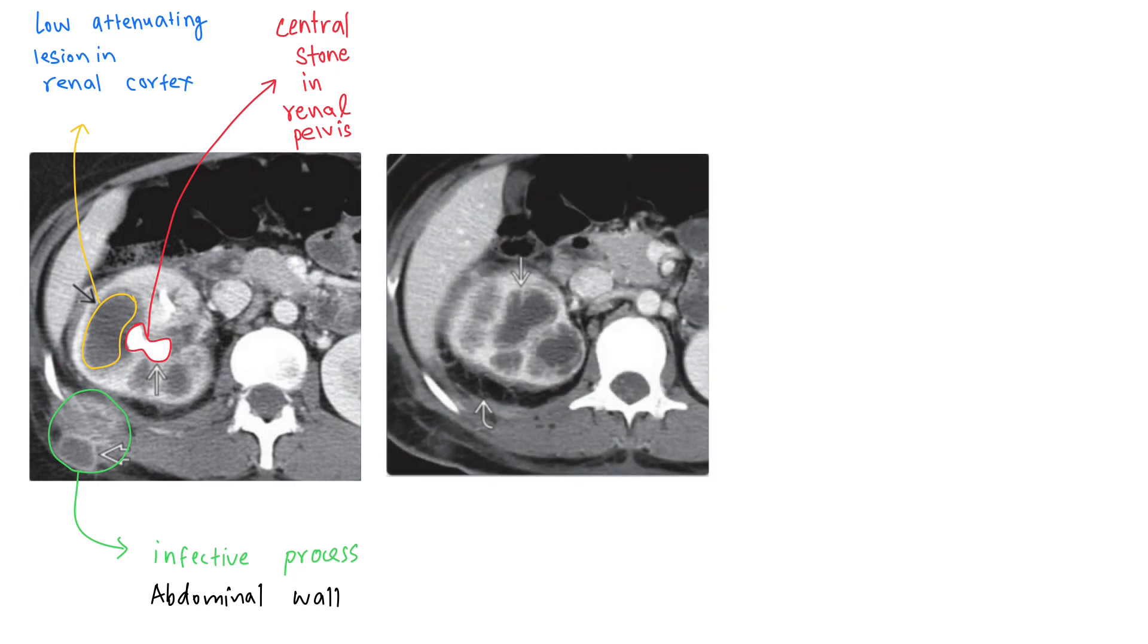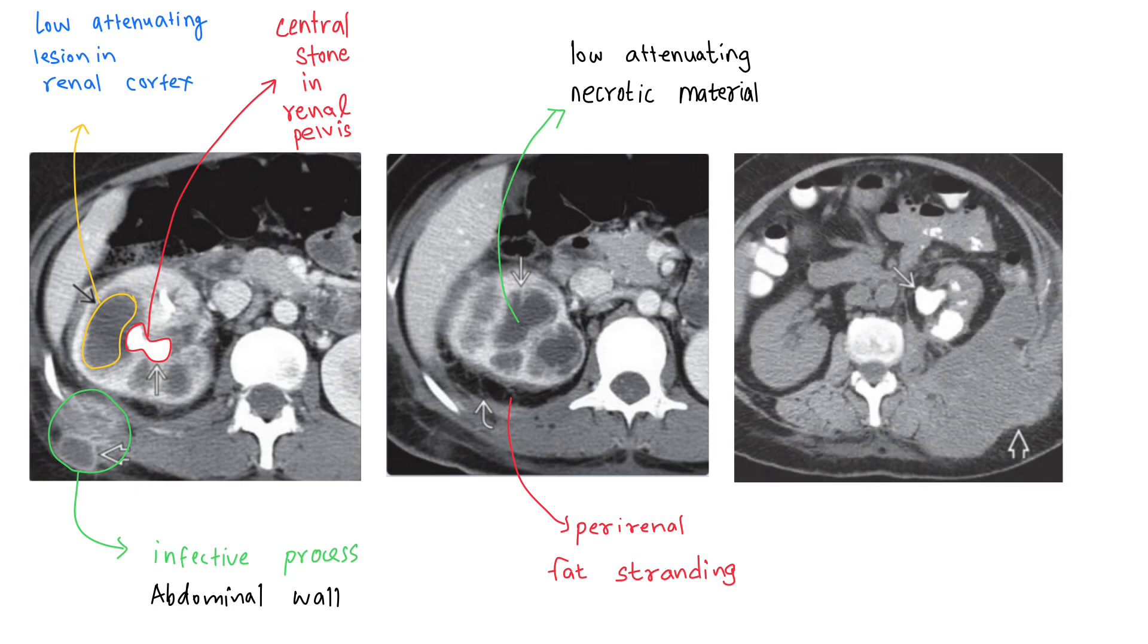Moving on to the second axial cut CT plate, we can clearly see the perirenal fat stranding, suggestive of local perirenal inflammation. There is also evidence of multiple low-attenuation necrotic material corresponding to debris-filled calyces and xanthoma. The third image is suggestive of staghorn calculus in the collecting system of left kidney, with also a collection in the left retroperitoneum, the psoas muscle, and posterior abdominal wall musculature.